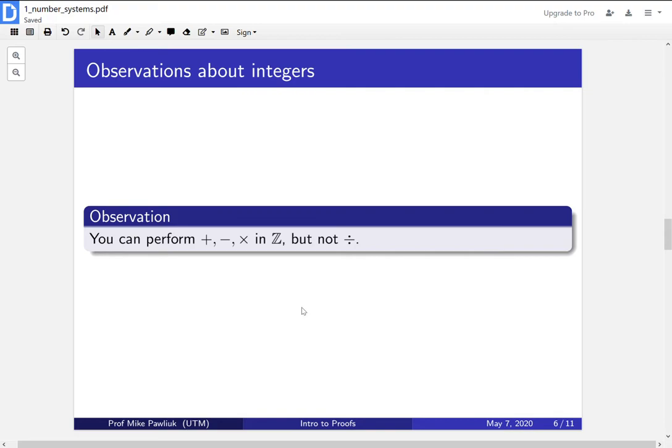So one observation about the integers is that now, in addition to addition and multiplication, you can now perform subtraction in the integers. So if those are the only three operations you're concerned with, you can work perfectly happy in the world of integers. Division isn't always possible, it's sometimes possible, but typically you don't expect that the division of two integers will give you back an integer.